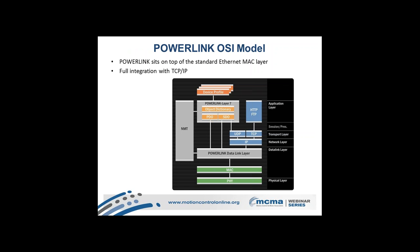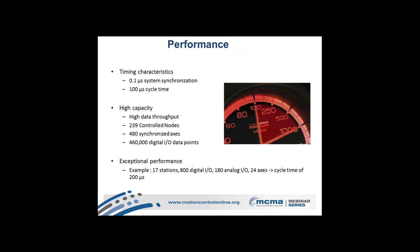From an OSI model perspective, Powerlink is essentially a layer 7 application. You'll see terms like PDO and SDO because Powerlink is effectively CANopen over Ethernet, using the same communication mechanisms and protocols. As a timing example, a system with 17 stations, 800 digital IO, 180 analog IO, and 24 axes of motion could theoretically run with a 200 microsecond cycle time — the protocol is very efficient and fast.